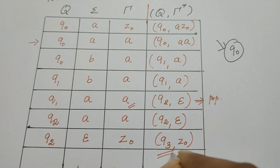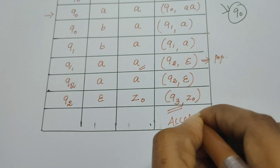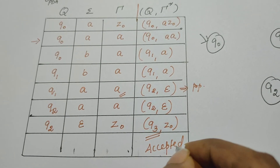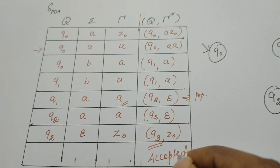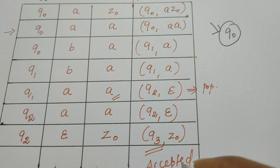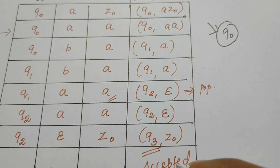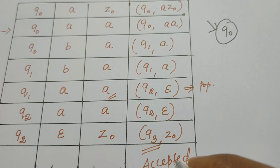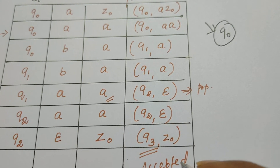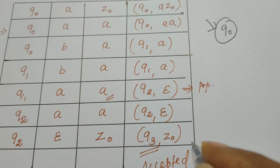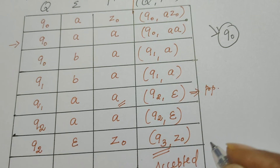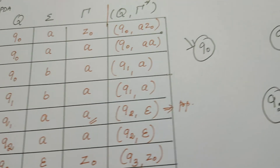If it enters q3, it means the string in the input tape is recognized and accepted by the PDA. When designing any automata — whether pushdown automata, finite automata, or Turing machine — we keep in mind the strings that belong to the language. We generally don't worry about strings that do not belong to the language. If such a string is kept in the input tape, the automata does not know how to react and abruptly stops.